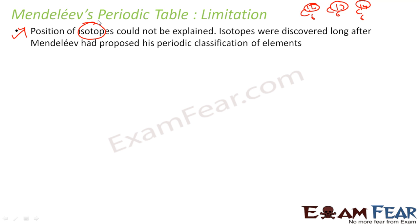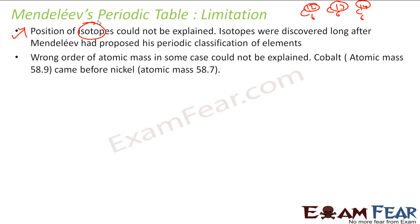And then it was not very good, correct? Also, some order of atomic mass was wrong in some cases, and that could not be explained. For example, cobalt was 58.9, it came before nickel, and nickel is 58.7.